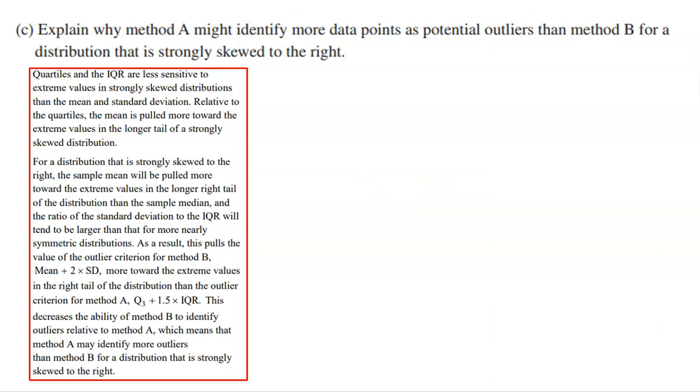Now part C says, explain why method A might identify more data points as potential outliers than method B. In fact, that actually is what happened. Using the 1.5 times the IQR rule, we found two outliers, 12 days and 21 days. Using the standard deviation rule, we found only one outlier at 21 days. So why is that?